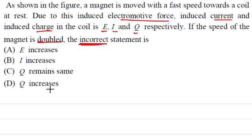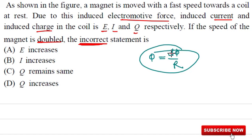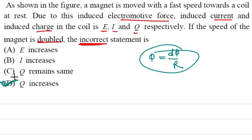Now for the charge: Q = dφ/R. The charge depends only on the change in flux and the resistance. Whether you bring the magnet at normal speed or double speed, the flux change is the same and resistance is the same, so Q remains constant — Q does not increase. Option D (Q increases) is the incorrect statement and is therefore the correct answer to pick.